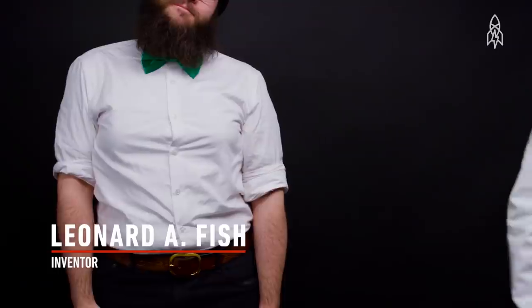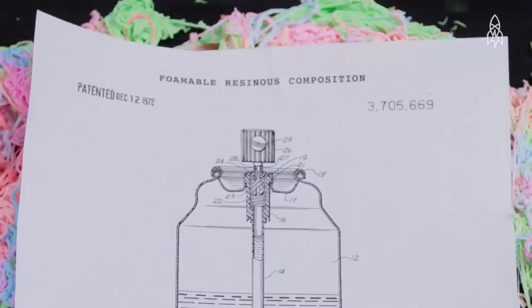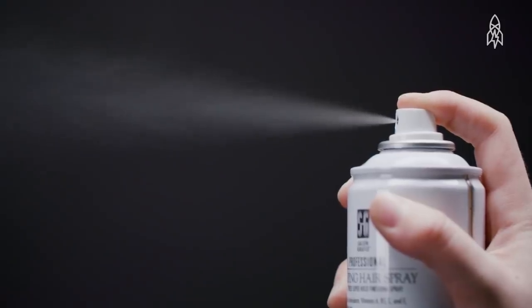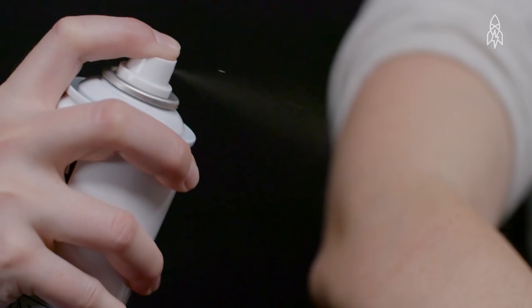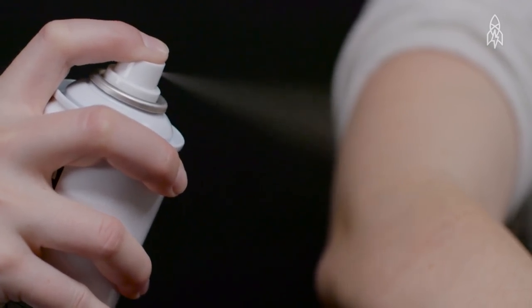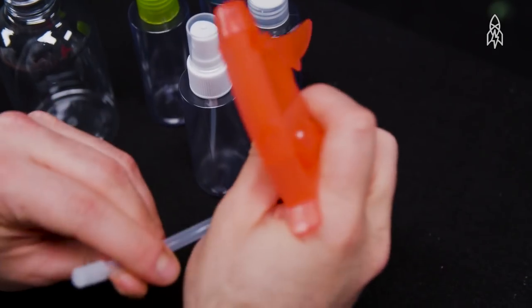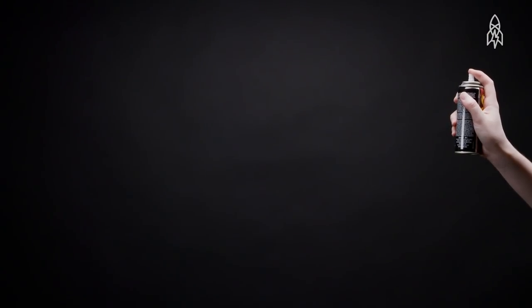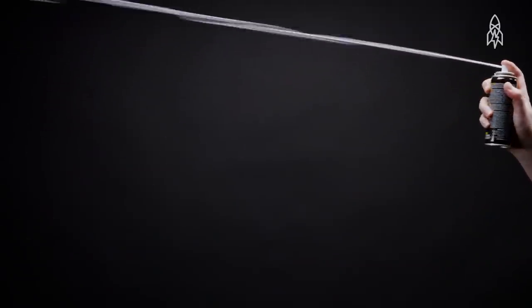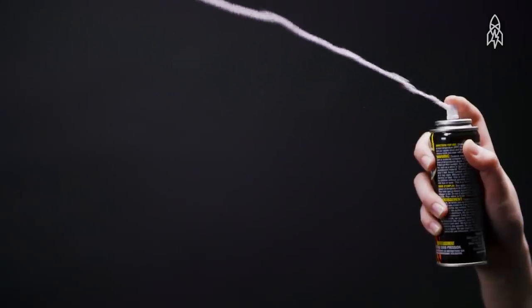In 1972, Leonard A. Fish, an inventor, and Robert P. Cox, a chemist, were granted a U.S. patent for a foamable resinous composition. The two initially set out to create an aerosol can that could spray an instant cast on a broken leg or arm. And the invention worked. But when it came to packaging their discovery, they tested 500 different types of nozzles. Through their tests, Fish came upon one that produced a string, a string that shot 30 feet across the room.